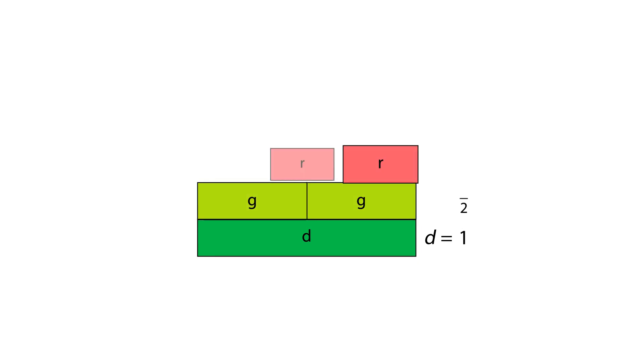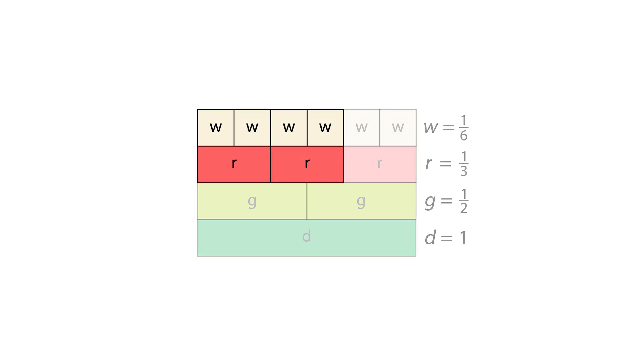We can then use the rods to show equivalent fractions. For example, we can see that 2 reds are equal to 4 whites, so 2 thirds is equivalent to 4 sixths.